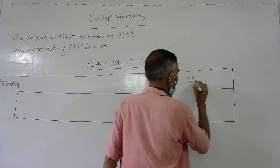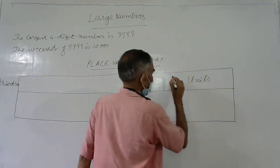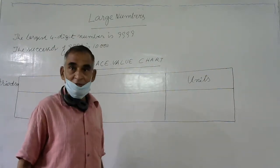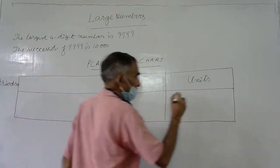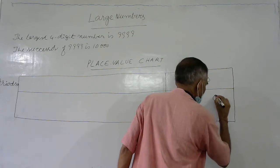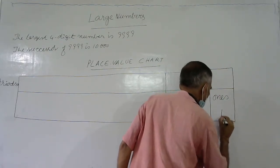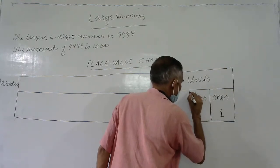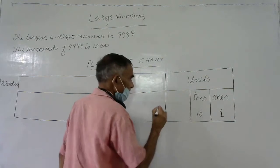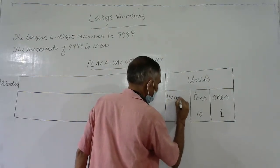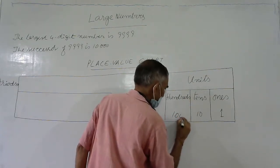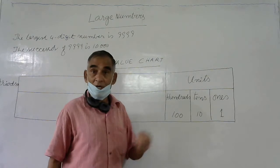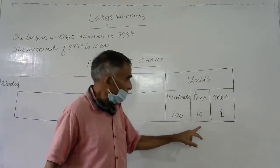The first period is the units period. This units period is divided into three places. The first place is the ones place, the next is the tens place, and the next is the hundreds place. So the units period has three places: ones, tens, and hundreds.